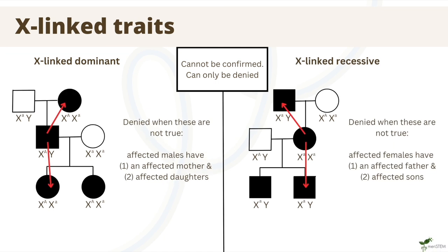Here is a nice summary of how to tell that a trait is X-linked. For X-linked dominant traits, all affected males should have mothers and daughters that are affected. For X-linked recessive traits, all affected females should have fathers and sons that are affected. If these trends are held, then the trait is said to possibly be X-linked — but it could still be autosomal. If these trends are not held, then the trait is autosomal. This is why we cannot confirm that a trait in a pedigree is X-linked; we can only deny it.